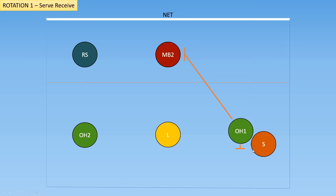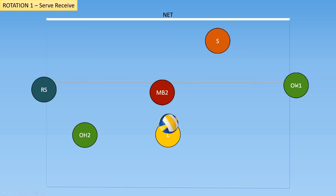Now the serve comes over, and the setter immediately leaves her position to get into her proper setting position. All of these players got ready to hit. As soon as the outside hitter knew she wasn't passing, she got to the right to hit. Now the setter can set any player she wants.